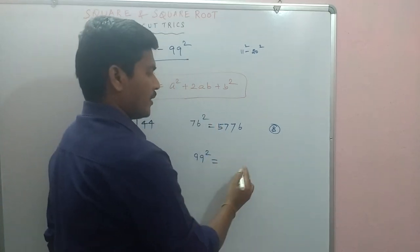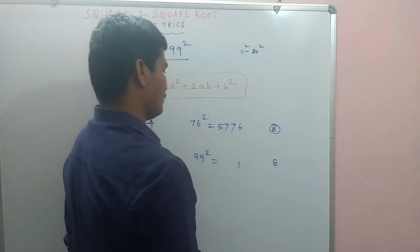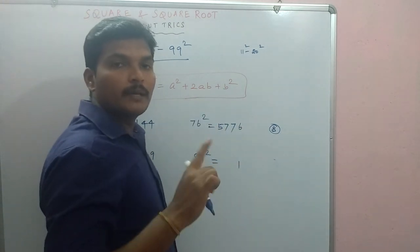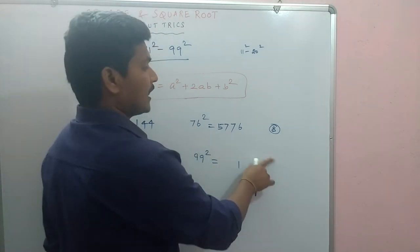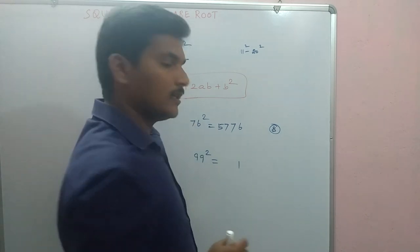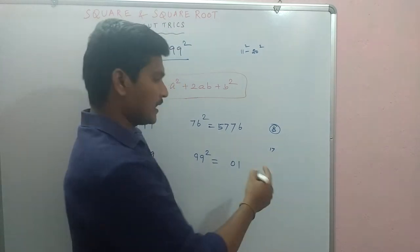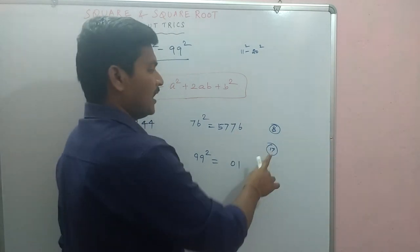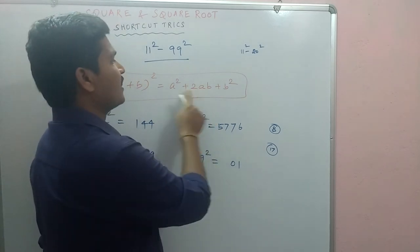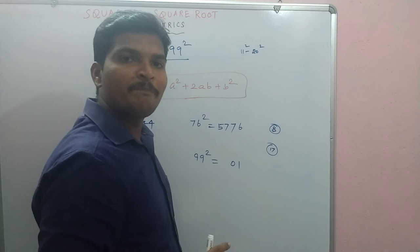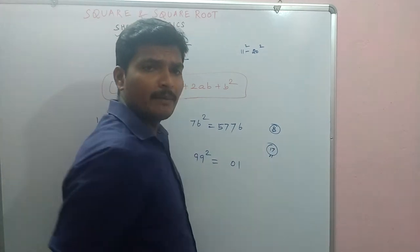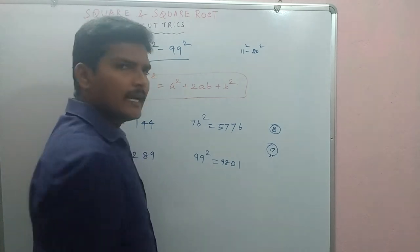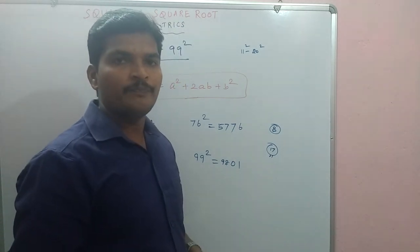99 square: 9 times 9 is 81. Write 1, 8 carry-over. 8 here. 99 gives 81. For 98 square: 9 times 8 is 72. 8 carry-over, write 0. For 97 square: 9 times 7 is 63. 2 carry-over, 1 number. If you practice 10 numbers, you will get fluent.